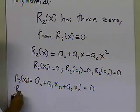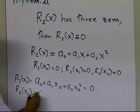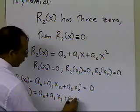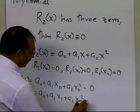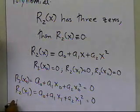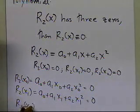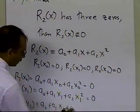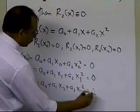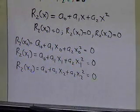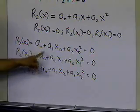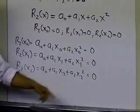Similarly, R2 at x1 is zero, which gives a0 plus a1·x1 plus a2·x1² equals zero. We also know R2 at x2 is zero, so a0 plus a1·x2 plus a2·x2² equals zero. So we have three zeroes of R2 at x0, x1, and x2, giving us three equations and three unknowns.